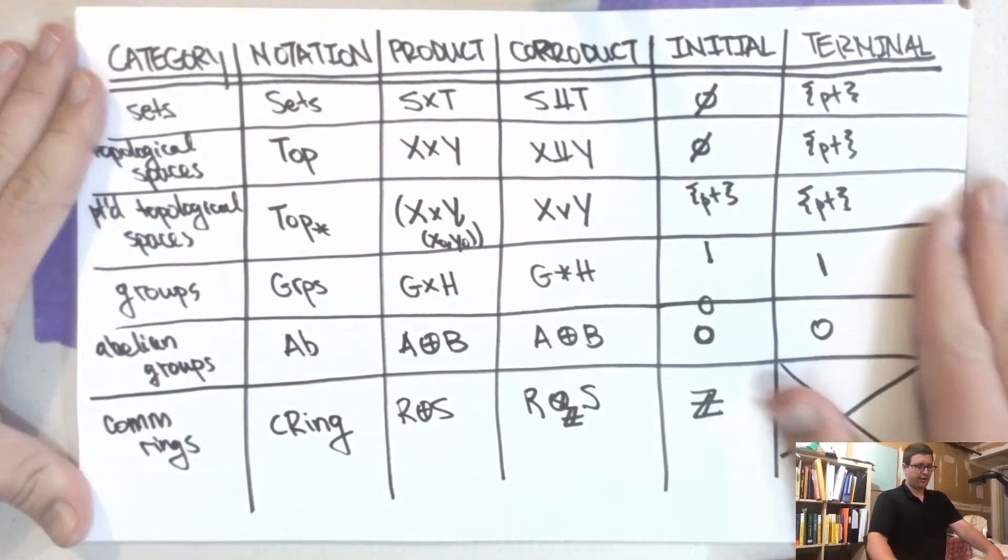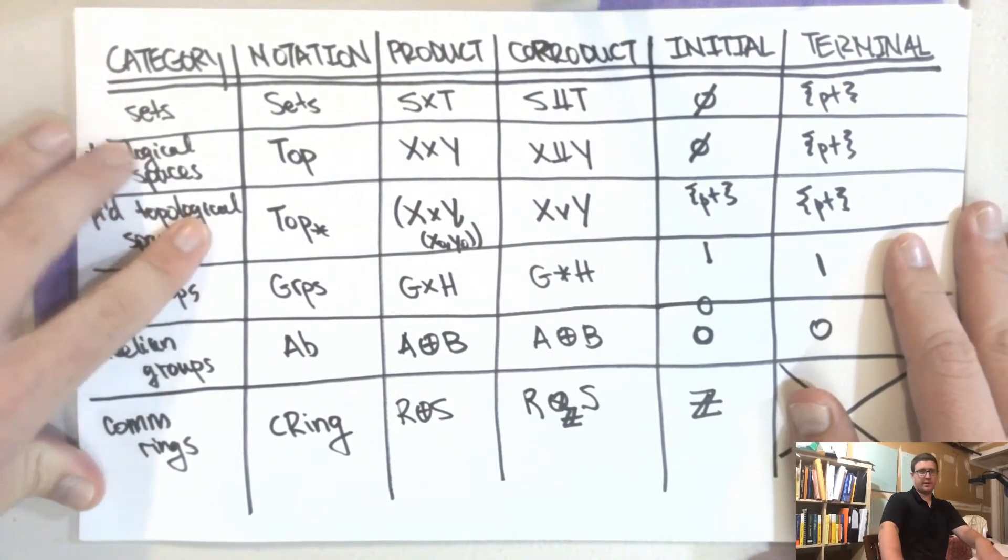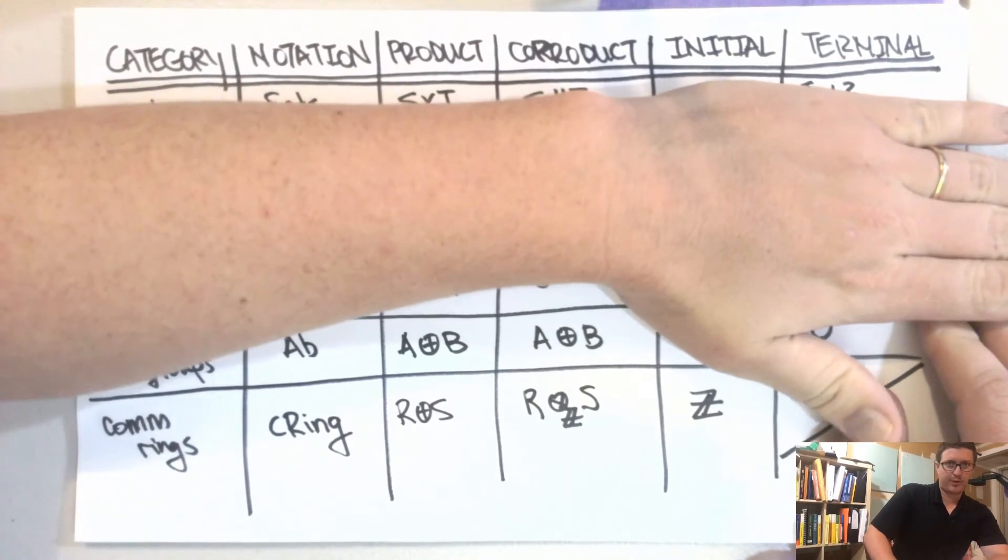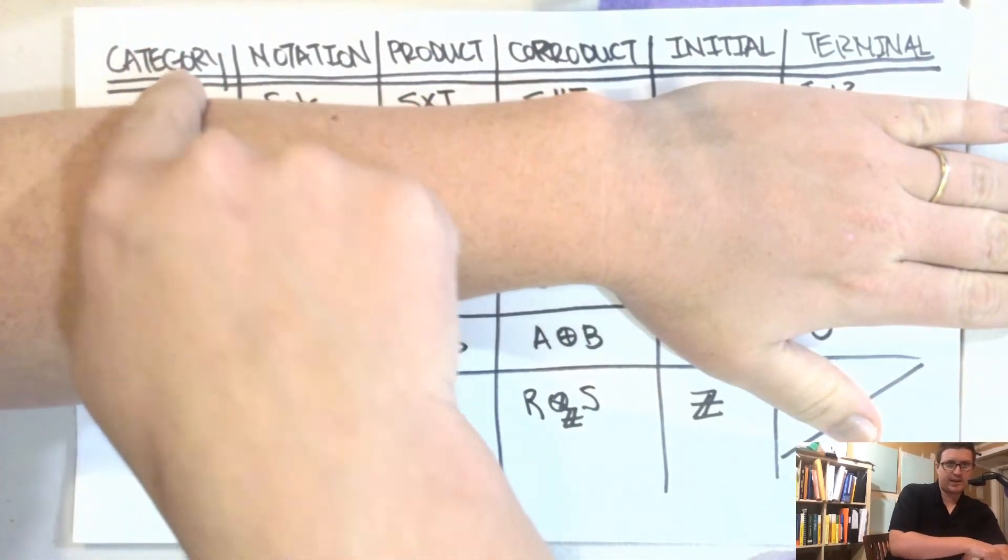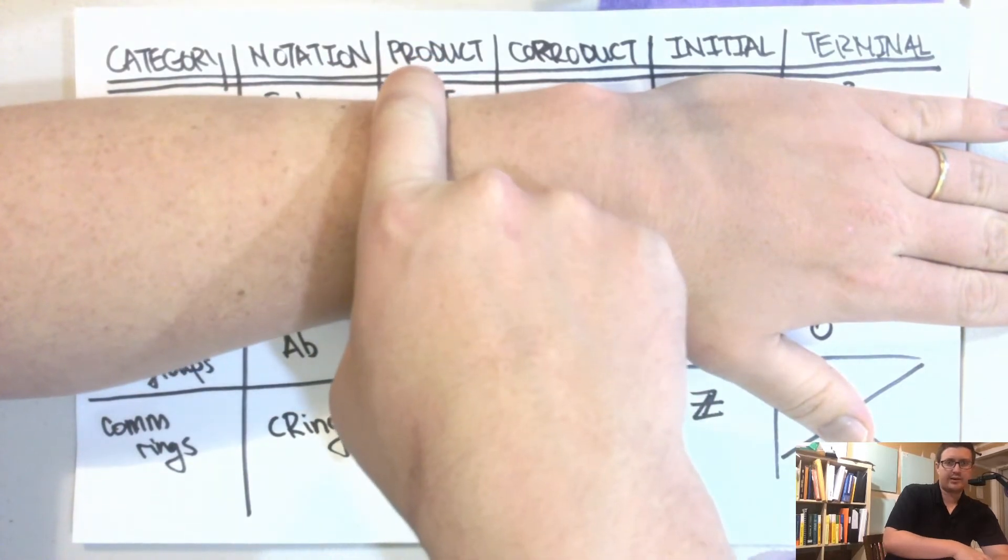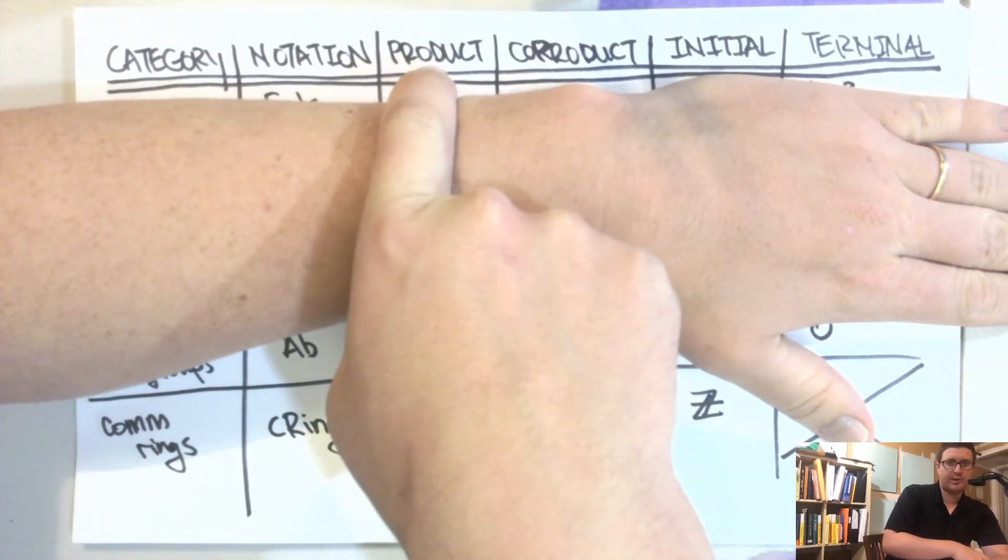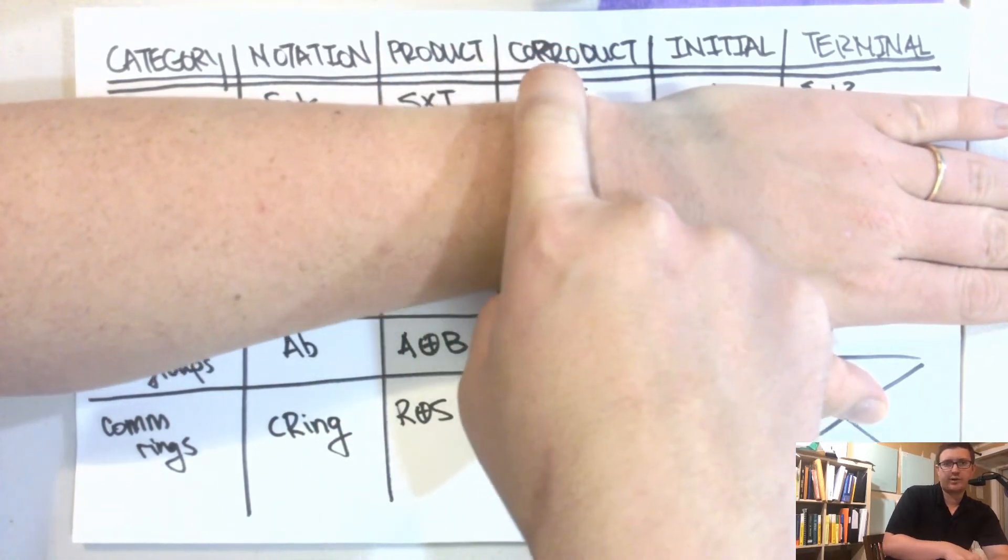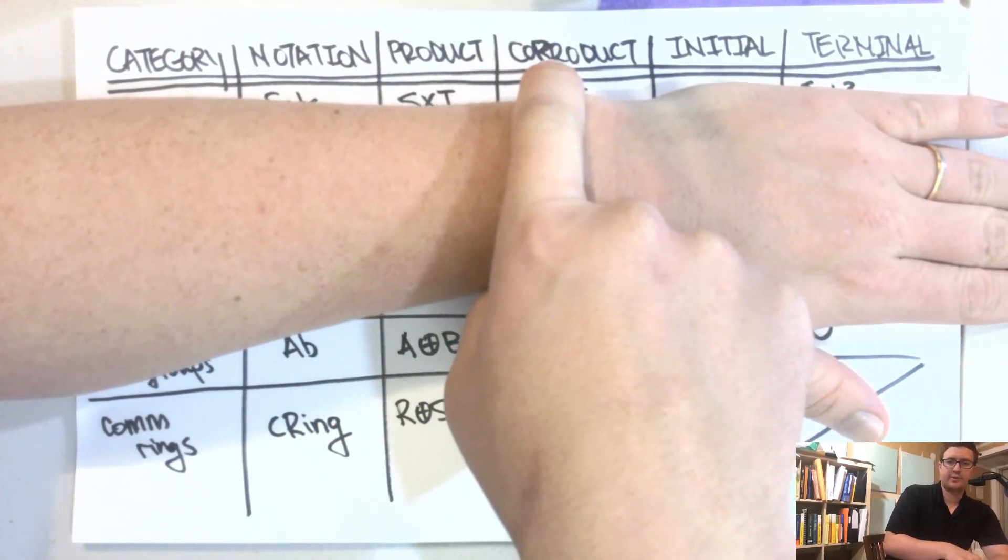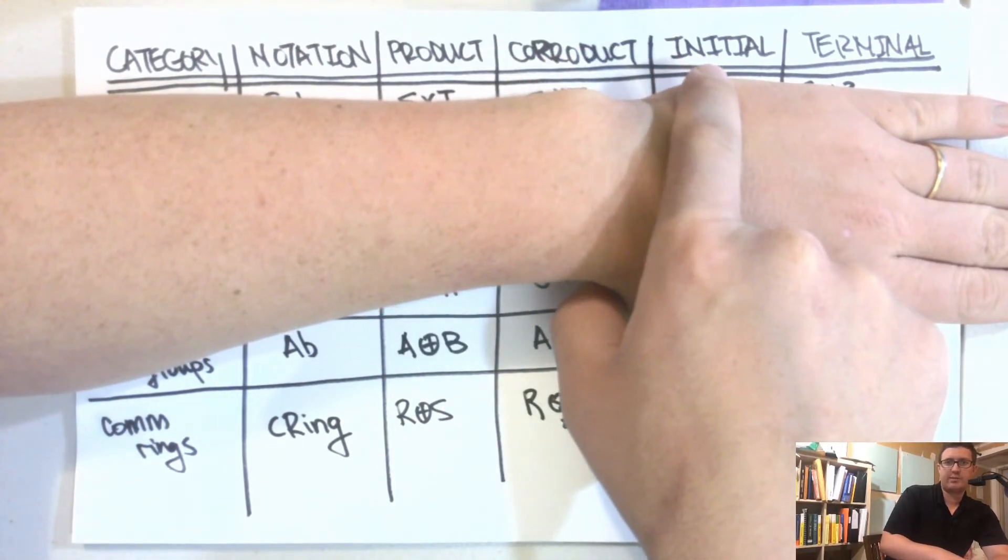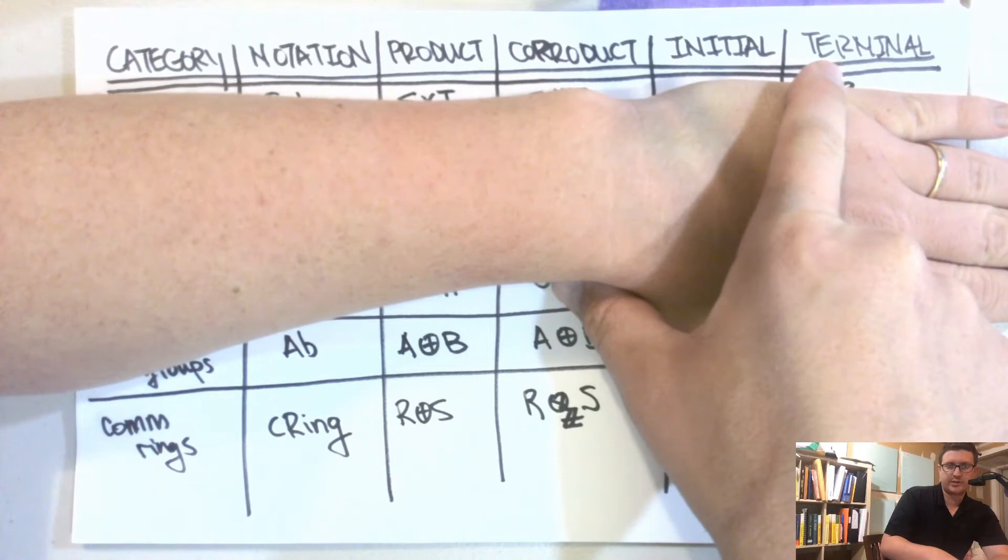So I made a big table here of a bunch of limits and co-limits. So if we just look at the category, what this top row is here is it's got a category, some notation, the product in the category, so this takes two objects and forms a new object that satisfies a certain property, the co-product in the category, which takes two objects and forms an object in the category, an initial object which is a special type of object in the category, and a terminal object.